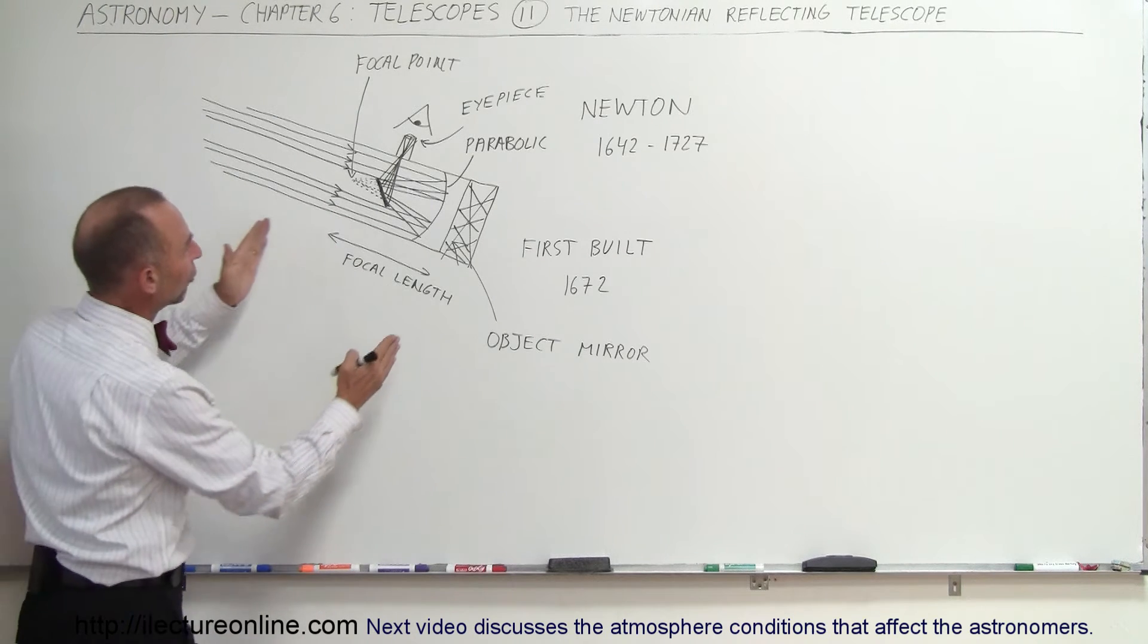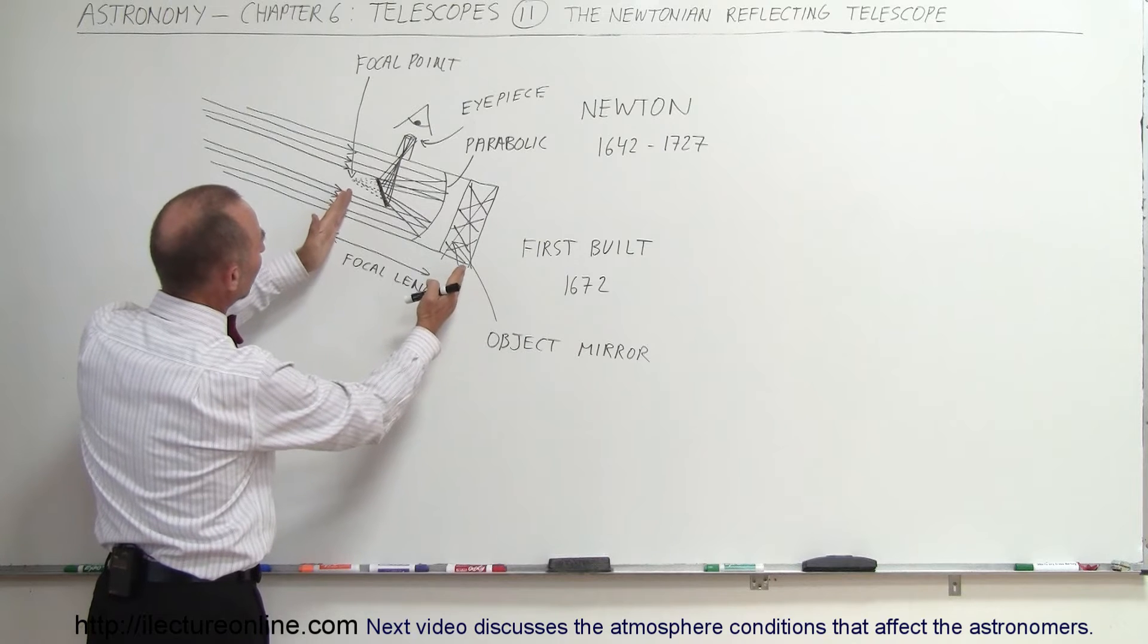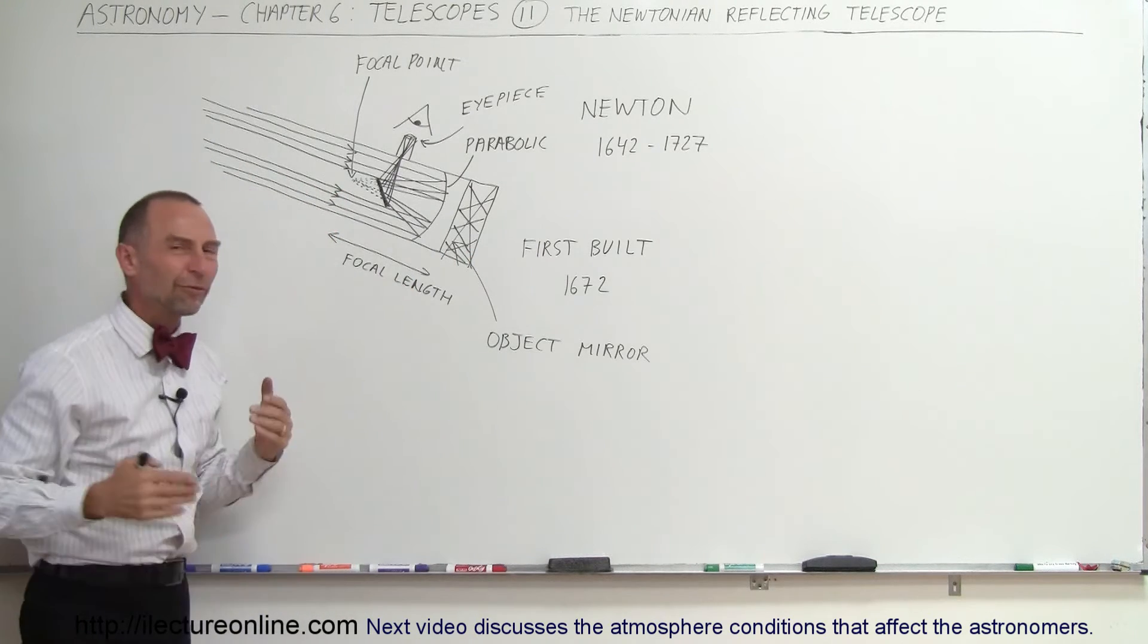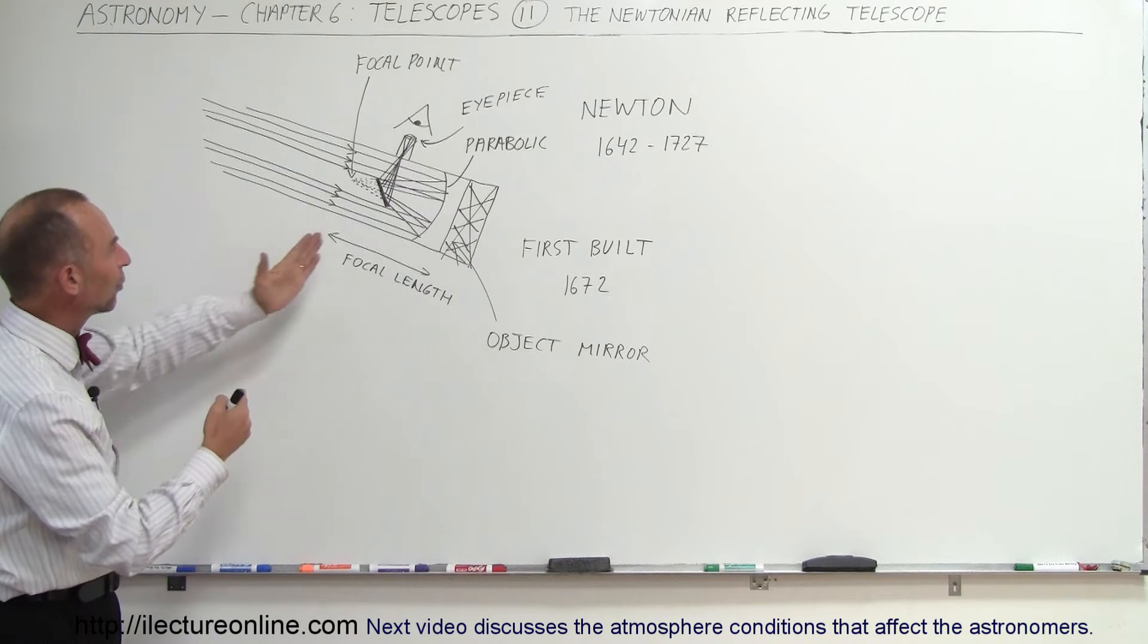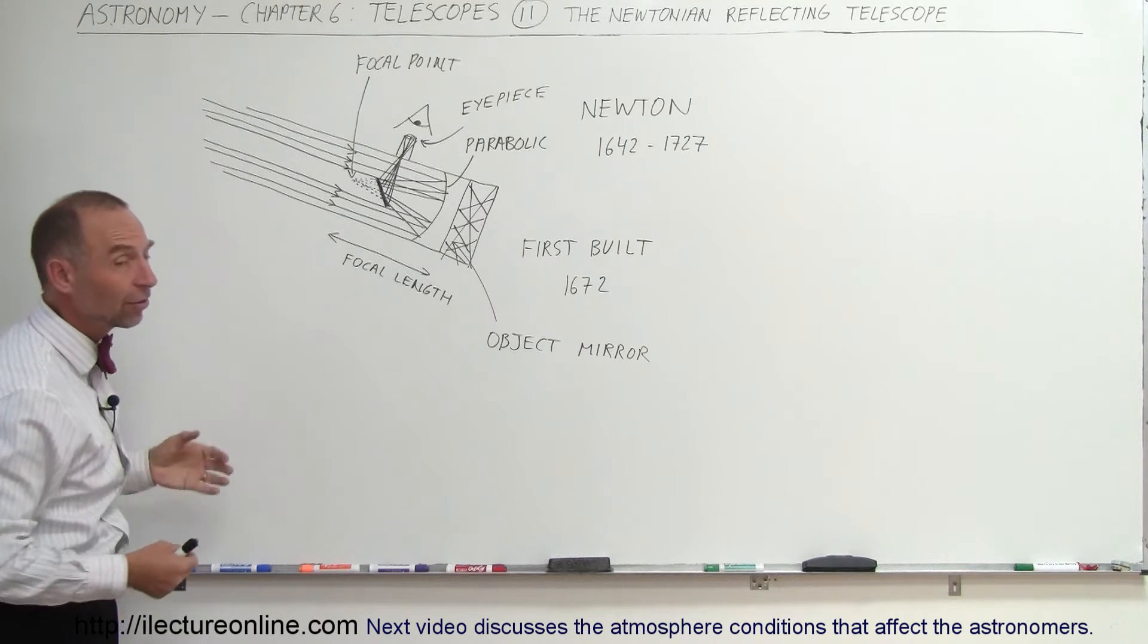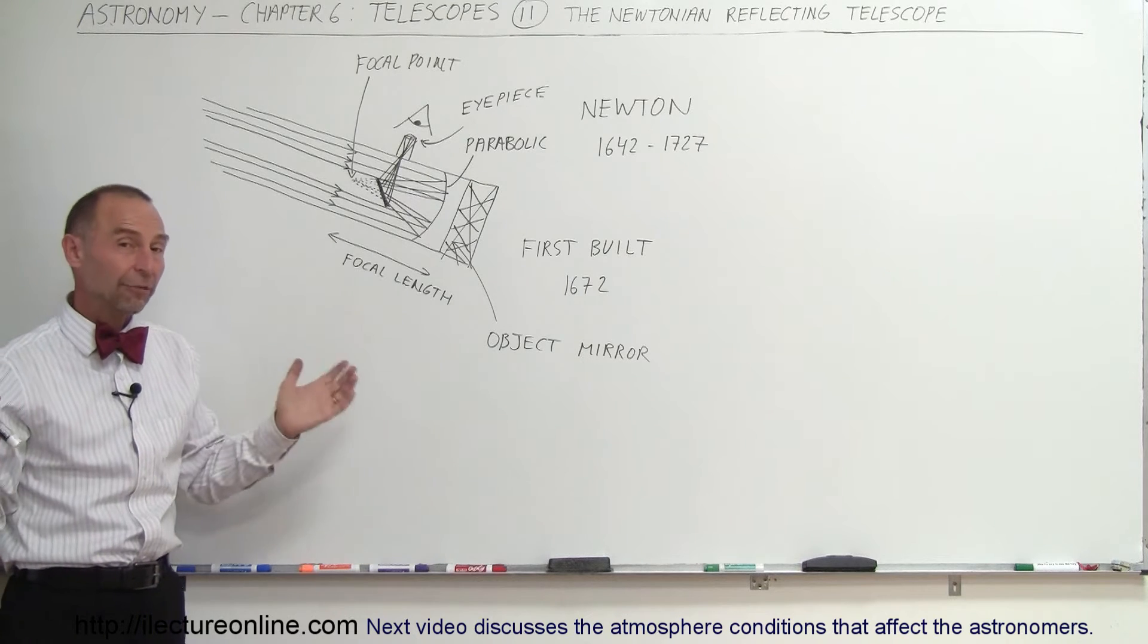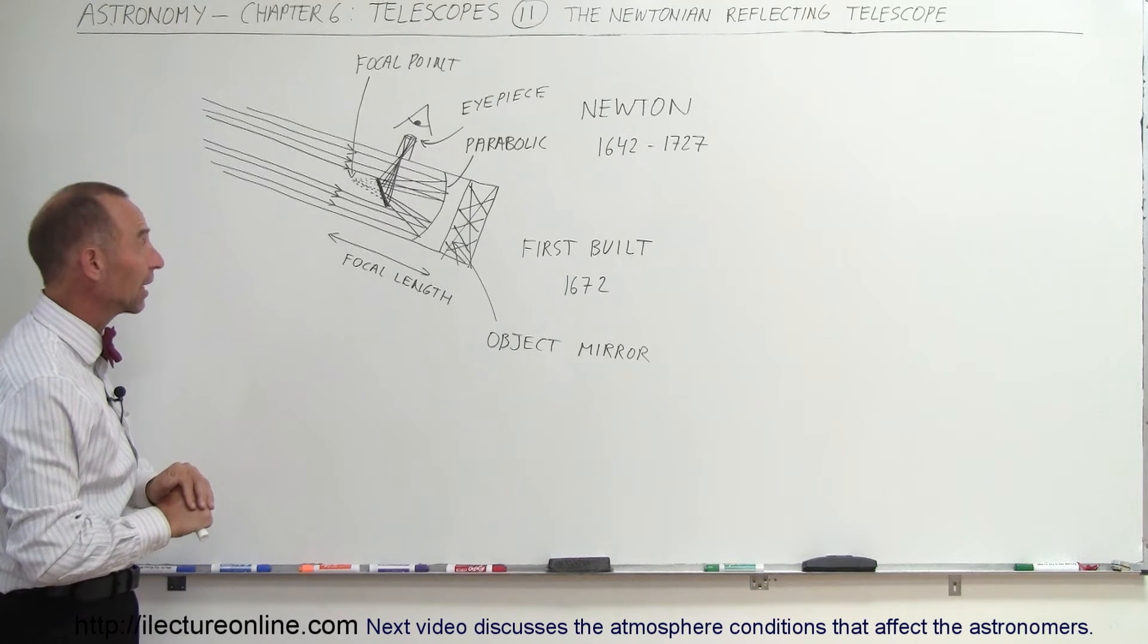Now, what happens though is that the focal length of these telescopes tend to be somewhat smaller. These tend to be shorter. Of course, some of the very big telescopes have now been adapted to have very long focal lengths because the longer the focal length, the greater the magnification. And yes, with the very big telescopes, we wanted a big magnification.